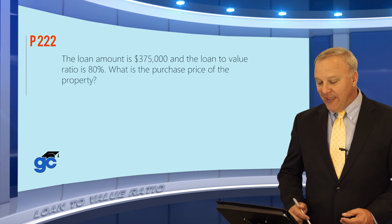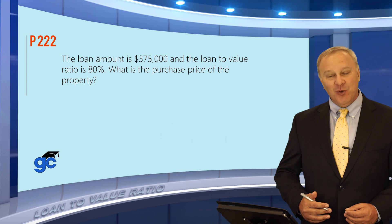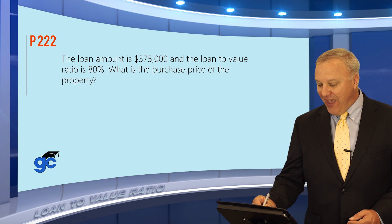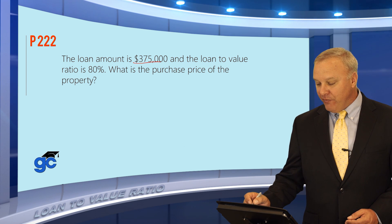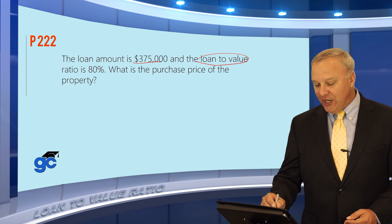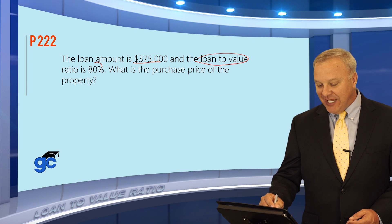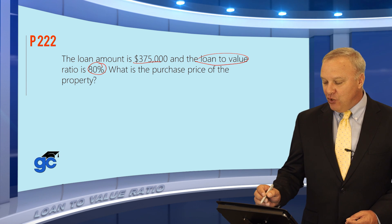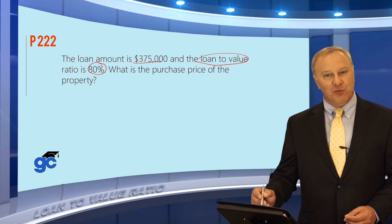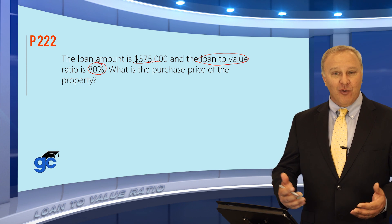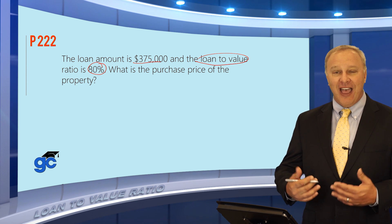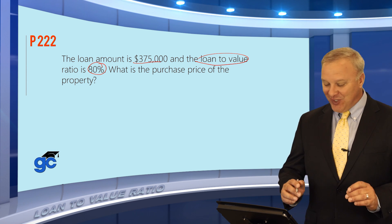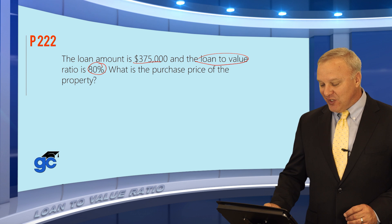One more question on this. This one says that the loan amount is $375,000 and tells you that the loan-to-value ratio is 80%, so it's a little different. This question asks you what is the purchase price of the property — could also ask you the appraised value, sales price, different terms for it — but the math on this is exactly the same.